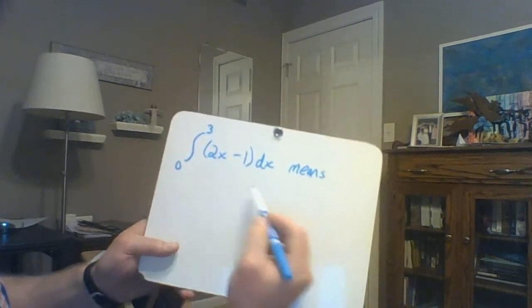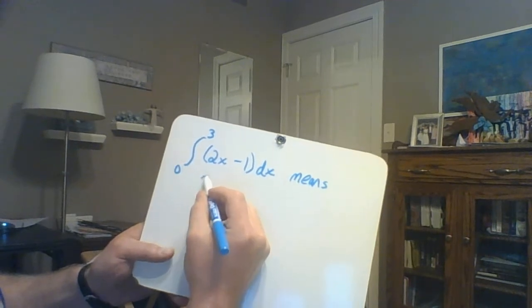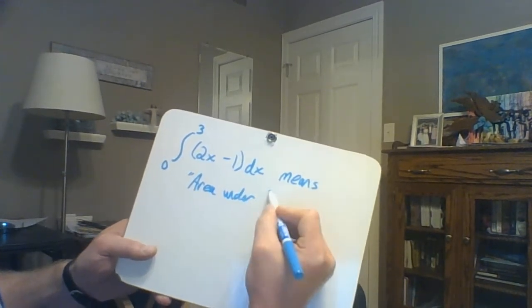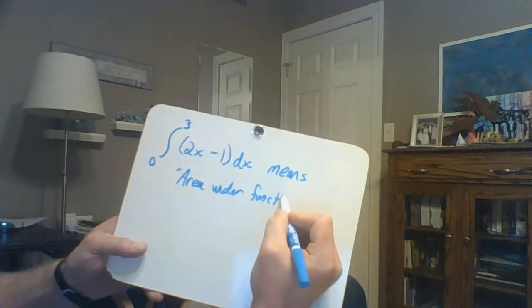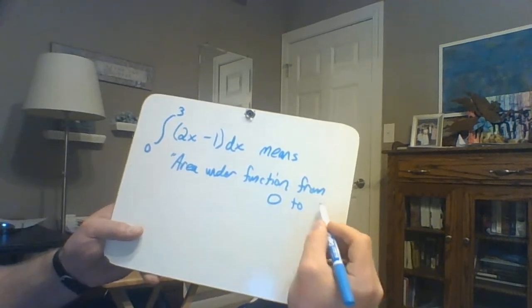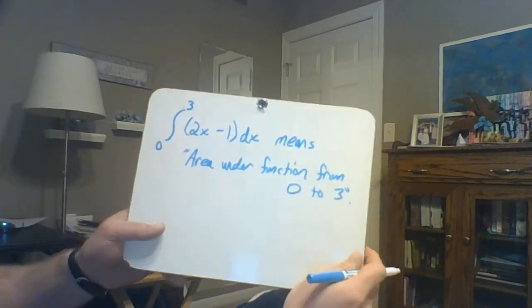But when we have a definite integral, it means the area under the function from, in this case, 0 to 3. That's all it wants.